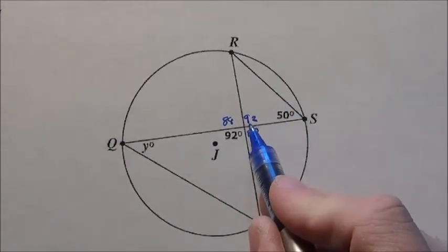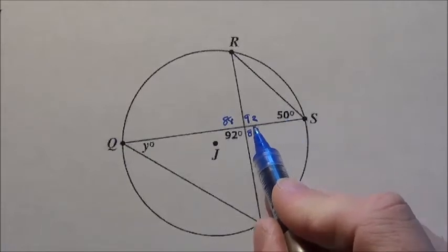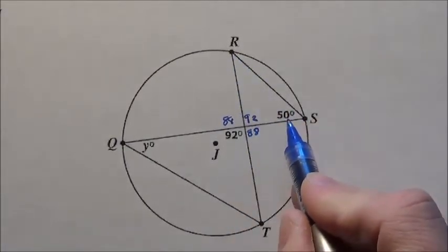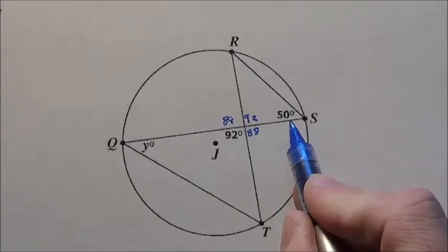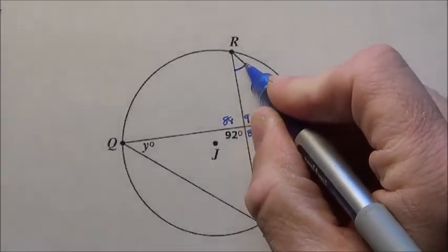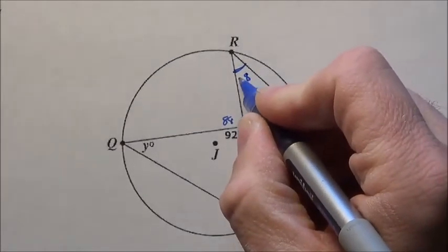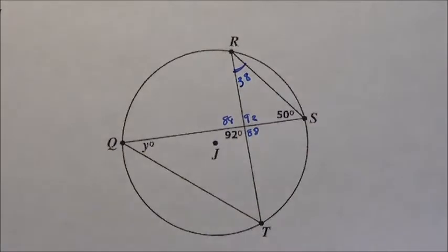Now if this is 92 and 50, that right there in this triangle adds up to 142. That tells me this angle right here, if those two add up to 142, this one has to be 38.